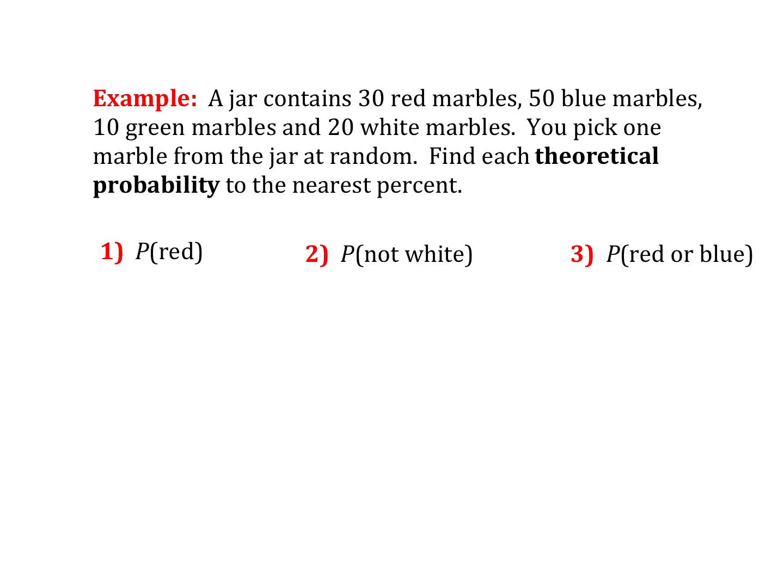Next step. A jar contains 30 red marbles, 50 blue, so that's 80 so far, 10 green, and 20 white. So all total, we have 110. So if I wanted to find the theoretical probability of each occurrence here, I would figure out the number of favorable outcomes over the total. So the probability I pick a red, well, there are 30 red out of 110 total. That would be 30 over 110, and we would convert that to a decimal. So about 27%.